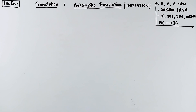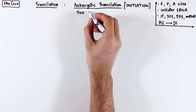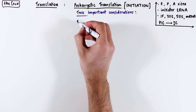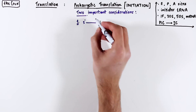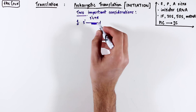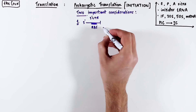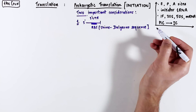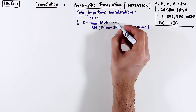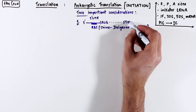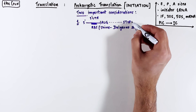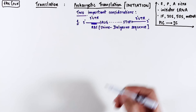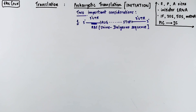Before we dive into this process, let's keep two very important things clear. First is the mRNA syntax for prokaryotes, which starts with the 5' UTR that contains the Shine-Dalgarno sequence. Following the 5' UTR, you have a start codon, AUG, which marks the start of a reading frame, and this reading frame then ends at a stop codon. Following the stop codon, you have a 3' UTR sequence.